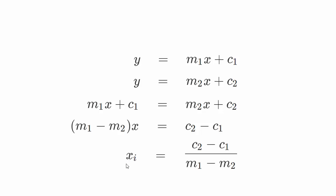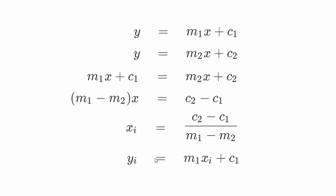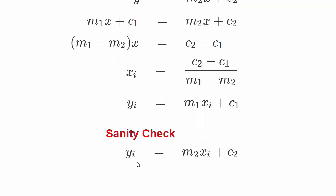So the X value at the point of intersection is XI equals (C2 minus C1) divided by (M1 minus M2). Using XI in this equation I can write YI equals M1·XI plus C1. And as a check I can verify the same YI equals M2·XI plus C2.